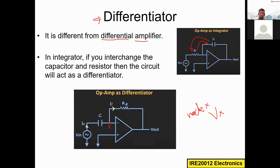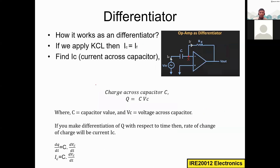You should remember how this differentiator circuit looks. To analyze how it works, we apply Kirchhoff's current law at node X. At this node, ic is equal to if. We need to find ic, which is the current across the capacitor.